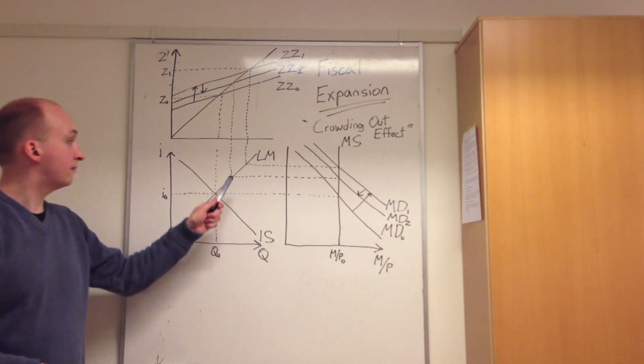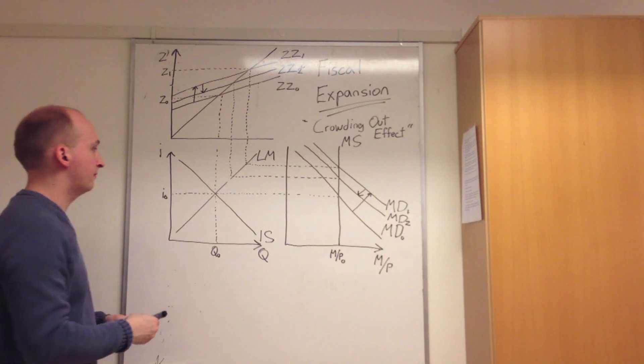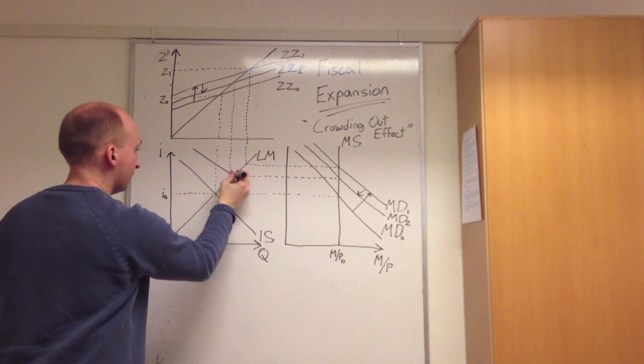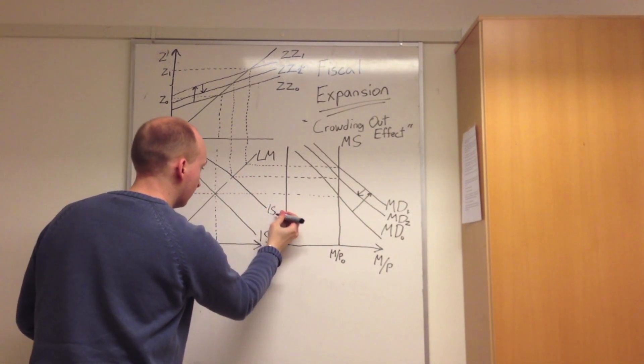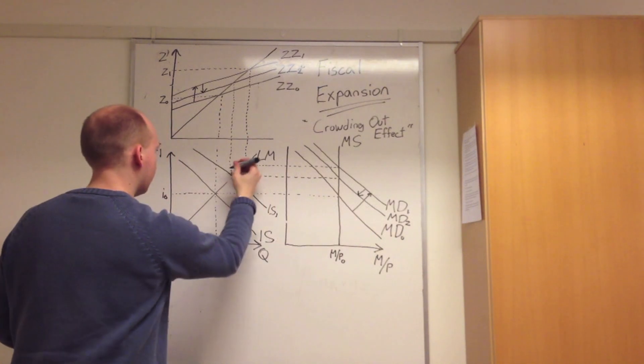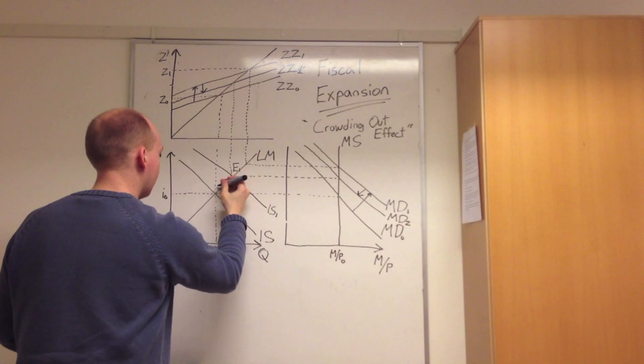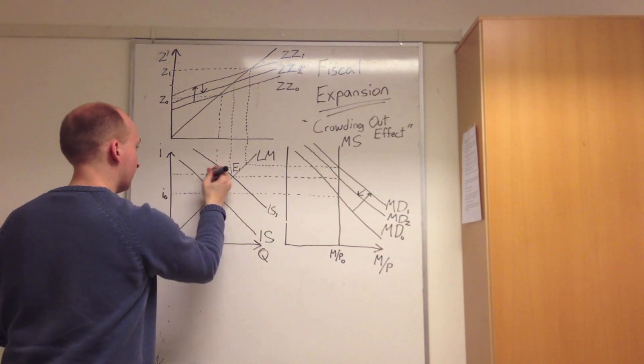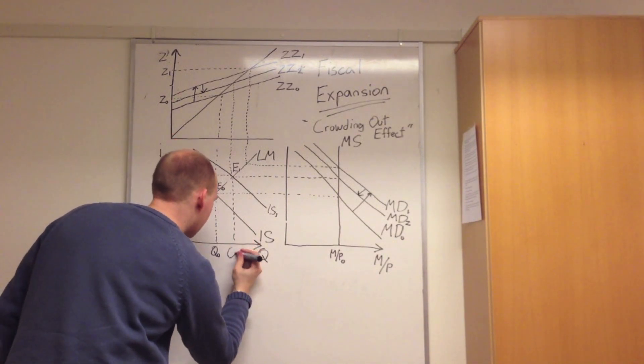Through a higher level of demand, we see that we have a higher position on the goods market. This shifts IS from IS0 to IS1. We then draw our new equilibrium rate at E1, up from E0. This would mean a higher level in the interest rate I, and thus a higher level in Q, quantity.